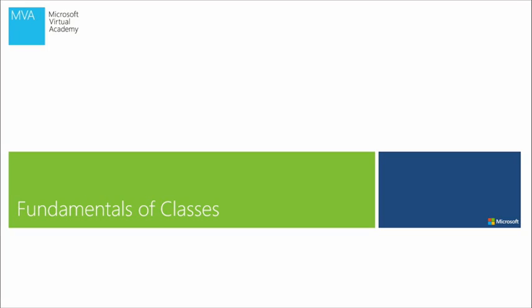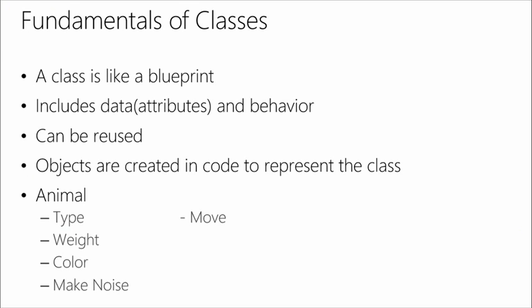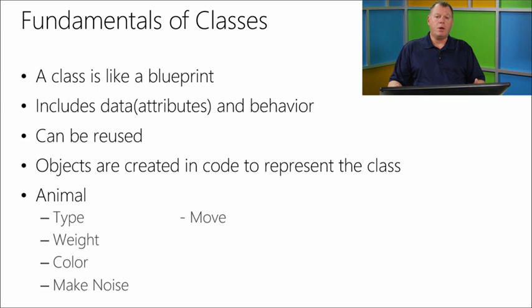Let's have a look at the fundamentals of classes. This allows us to focus on what a class is, how we potentially use them in our code and programs, and then we'll see a demo on how to create them. We can consider a class in our program sort of like a blueprint — a blueprint for a house, or a blueprint for an automobile. If we want to build a house, we have an architect draw up a blueprint with very specific information about what that house is going to look like: the number of windows, the size of the house, how it's going to be constructed.